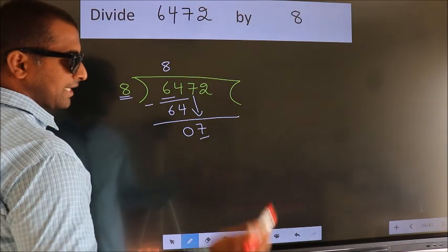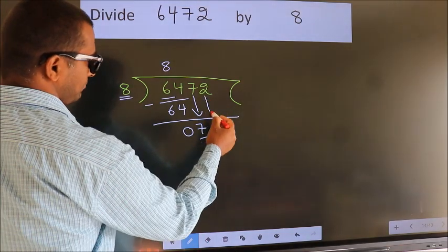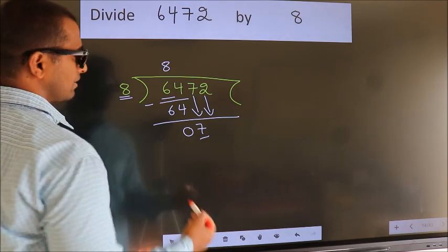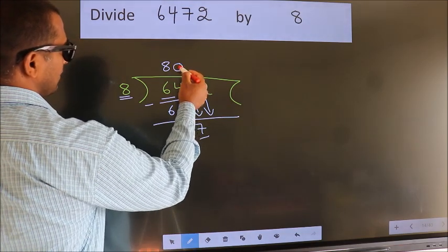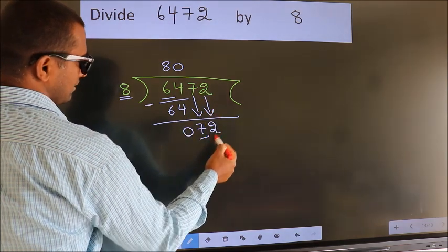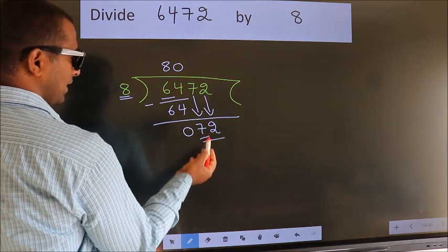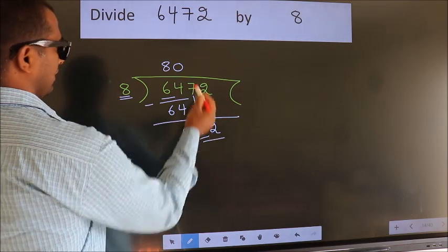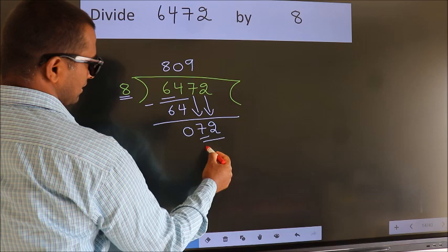So, we should bring down the second number. And the rule to bring down the second number is, put 0 here. Then only we can bring down this number. So, 72. When do we get 72? In the 8 table. 8 times 9 is 72.